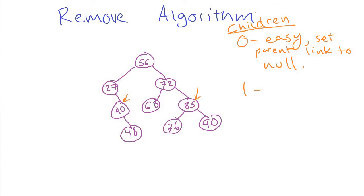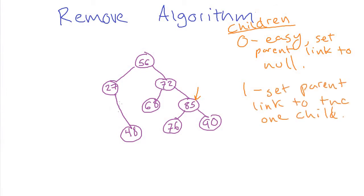Now let's talk about what we do if there's one child — that's the case for this 40 node here. We can't just set this link to null like we did last time, because then we would disconnect not only the 40 node, but also the 48 node. We want to keep the 48 in the tree. Instead, what we can do is set this 27 link to the 48, bypassing the 40 node and linking to this one instead. So we set the parent's link — instead of linking to the node we're deleting, we set it equal to the only child. A sort of morbid analogy is that if somebody dies, their parents take care of their children — the grandparent is adopting the children of their child who is now no longer.